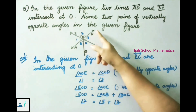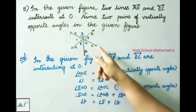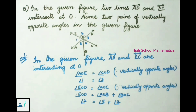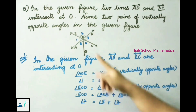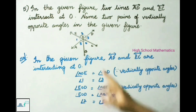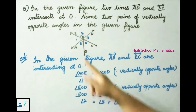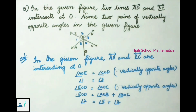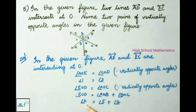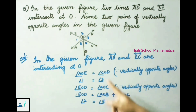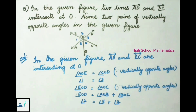The next pair: angle EOD is equal to angle AOC because these two angles are also vertically opposite angles. Angle AOC can be written as angle AOB plus angle BOC. So angle EOD equals angle AOB plus angle BOC. Angle EOD is angle 2, angle AOB is angle 5, and angle BOC is angle 4. Therefore, angle 2 is equal to angle 5 plus angle 4.